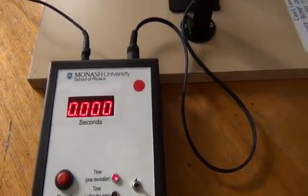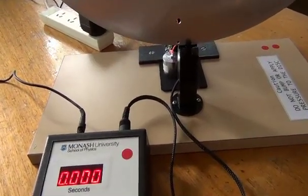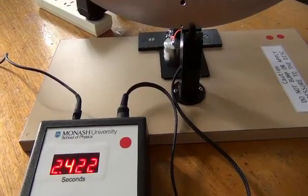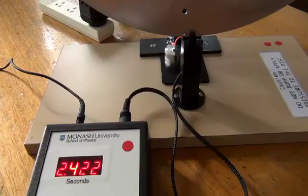When the hole passes the laser diode, light from the laser falls onto the detector and the timer starts. When it passes it again the timer stops. In this way you can determine the number of seconds it takes for one rotation of the disc.